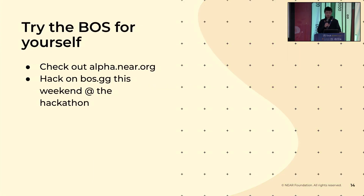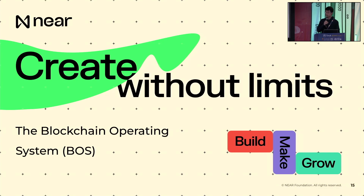Those are some of the very exciting things on the horizon. I've talked a lot about protocol features and how they support the blockchain operating system, but I think it's great for everyone to try it themselves. Please check out alpha.near.org — one of the gateways to the blockchain operating system. If you're working on the hackathon, please check out boss.gg, a gateway that allows people to build Ethereum applications on Near. That's it for my talk — thanks.